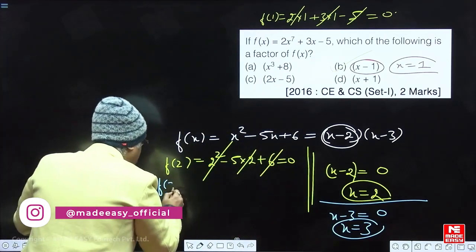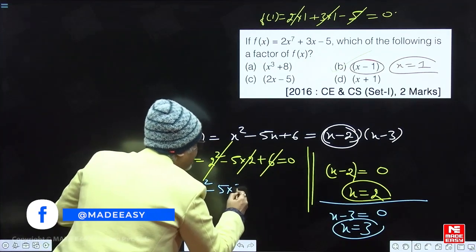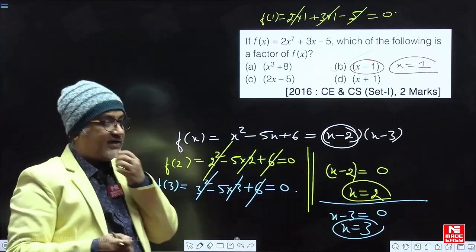So this quadratic polynomial will also become 0 on putting x is equal to 3: 3 square is 9, 5 into 3 is 15, 9 and 6 is 15, and 15 and 15 will give me 0. Wow. So we have understood it.